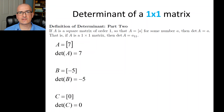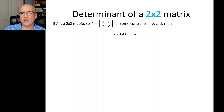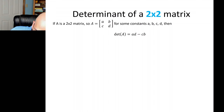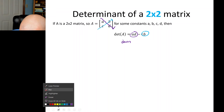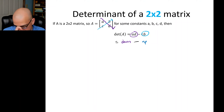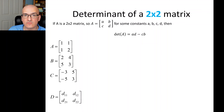What about a 2x2 matrix? For a 2x2 matrix, the determinant is also very simple. I'll denote a 2x2 matrix A with entries a, b in the first row and c, d in the second row. The determinant will be a times d minus c times b — you can think of that as a down product minus an up product. So that's a quick overview; we'll do a bunch of 2x2 examples.